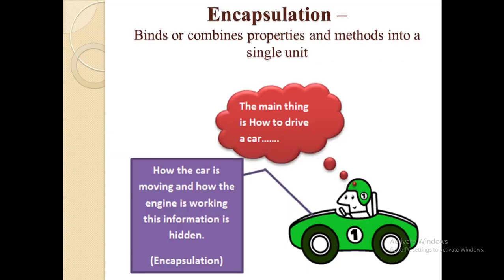Another important feature is encapsulation. Encapsulation binds or combines properties and methods into a single unit. For example, consider a car — the main thing for a normal user is to drive the car, not how the car is moving or how the engine is working. That information is hidden. A car is made up of different components like engine, gears, and body. How these components collaborate and work together, a normal user never knows, and there is no need to know. All this information and complexity is hidden from normal users. This is known as encapsulation.